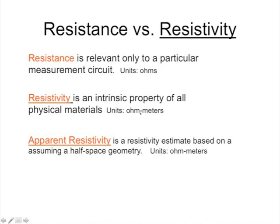As we talk about resistivity surveying, we get apparent resistivities — an estimate of the intrinsic resistivity property based on assuming a half-space geometry. The apparent resistivity is like the stacking velocity or RMS velocity — it's an average resistivity over a certain volume that comes out of a certain kind of experiment. We can model a resistivity structure going down from apparent resistivities measured at different electrode spacings. An apparent resistivity has the same units: ohm-meters.